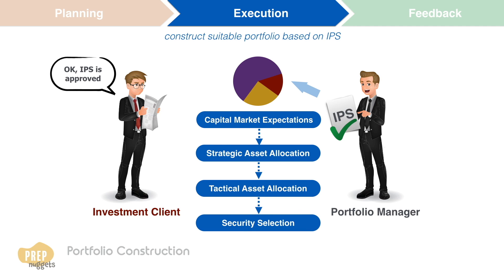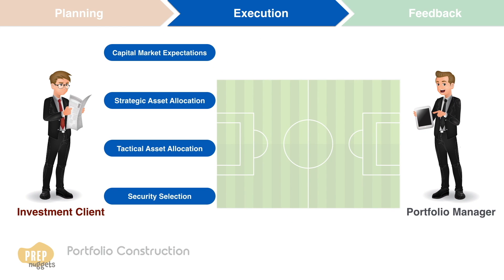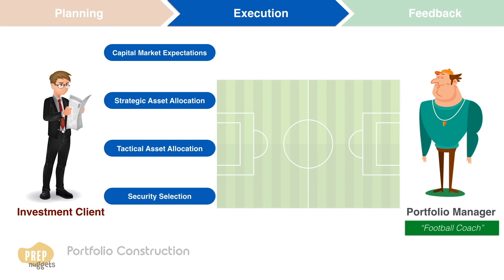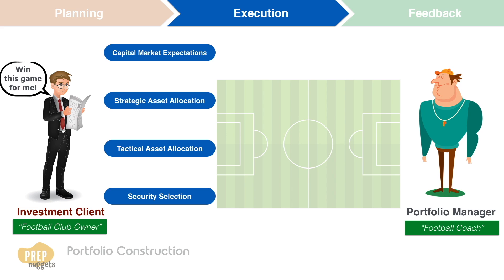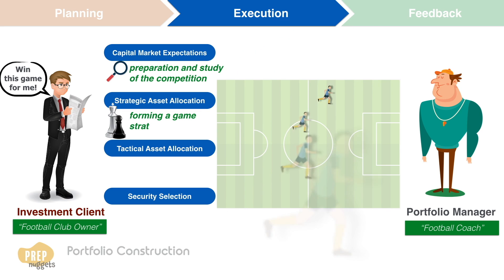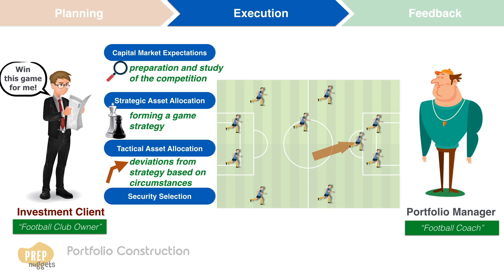You can use the analogy of a football team to help you understand the process. Imagine you're a football coach and your client is the football club owner who hired you to coach the team. Your task is to win the game for the football club owner. Forming capital market expectations is analogous to the preparation and study of the competition. Strategic asset allocation is analogous to forming a game strategy to win.